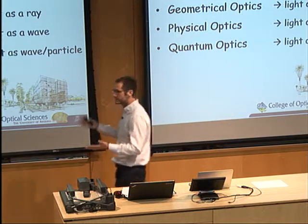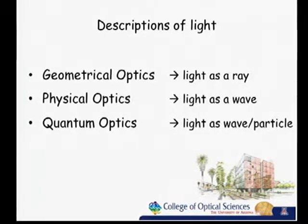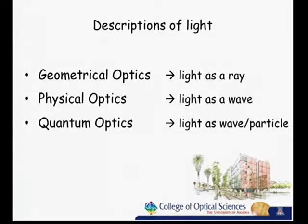All these different fields utilize different models for describing light. We have a geometrical optics picture, which is convenient for ray tracing. In physical optics, we treat light as a wave with polarization and amplitude. In quantum optics, we treat light as both a wave and a particle. In optical physics, we use a combination of these models—most often physical optics, but quite often quantum optics.